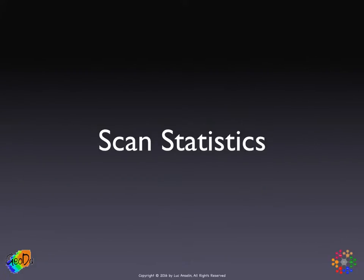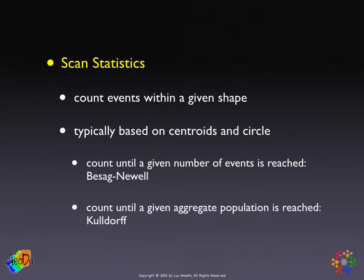Scan statistics are by far the most popular cluster detection method in public health and crime analysis work. The principle behind them is very simple, with a long history going back to OpenShaw, where you basically count events within a given shape. The tricky part is to decide whether the number of counts within a given shape is somehow elevated with respect to the rest. That's the key aspect of a scan statistic.